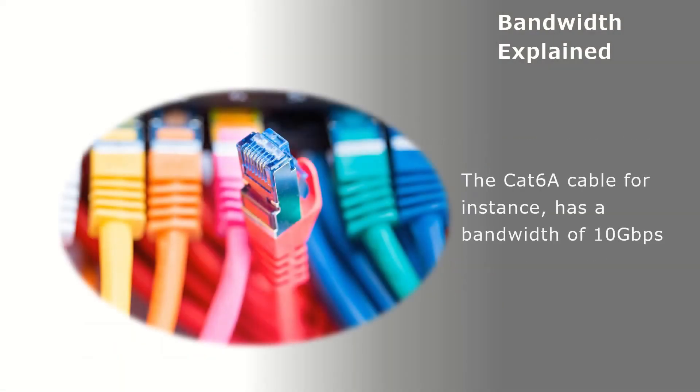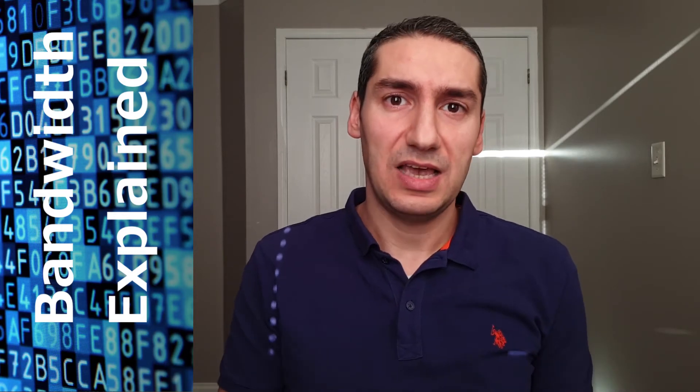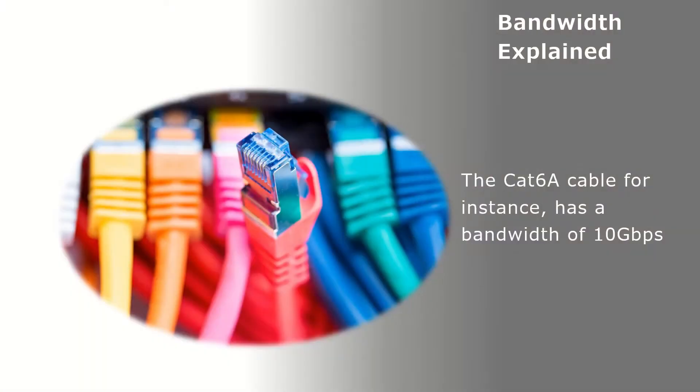As an example, take a Cat 6a cable. The bandwidth of a Cat 6a cable is 10 gigabits per second. However, when you install this cable in your system, your actual throughput or speed will be less. So 10 gigabits per second is the maximum bandwidth — the maximum speed or throughput that this cable can achieve.